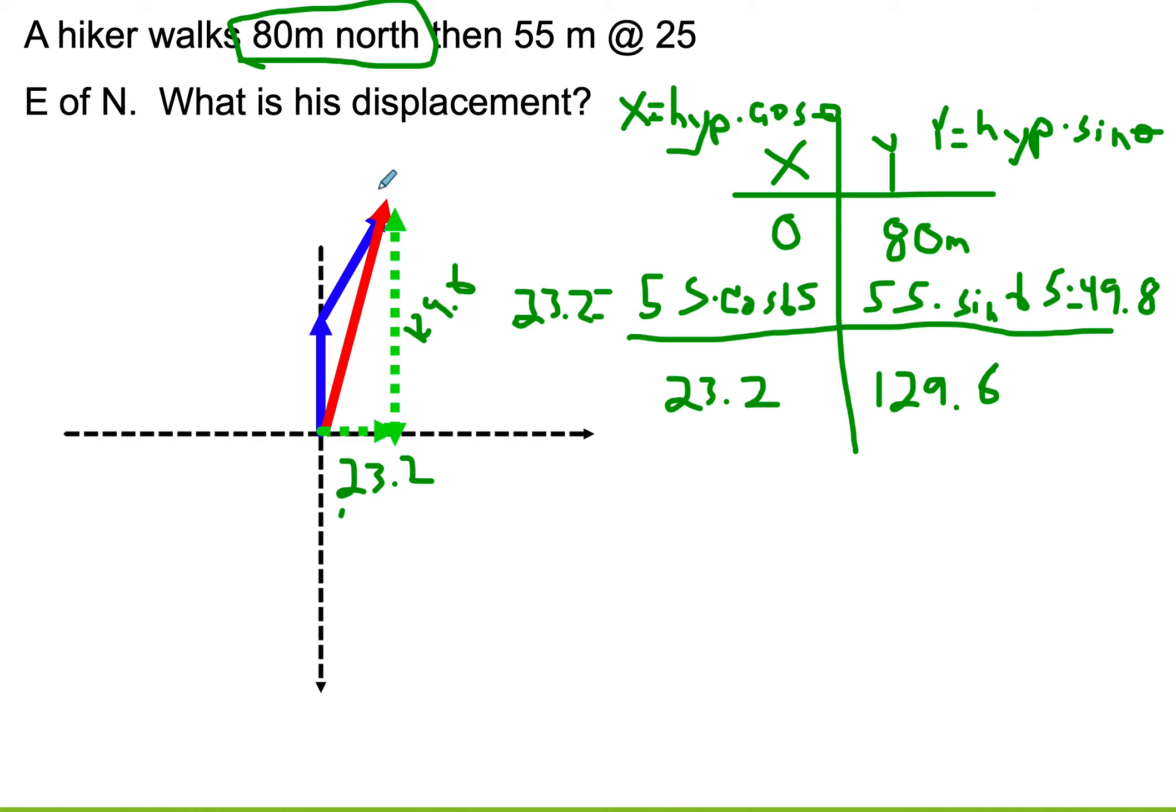Everybody knows how to do this. To find the length of it, I'll use a squared plus b squared equals c squared. So that would be 23.2 squared plus 129.6 squared equals c squared. Add those together. Take the square root. Can someone tell me what that is? 131.7. So this is 131.7. So that is how far I actually ended up from where I started.